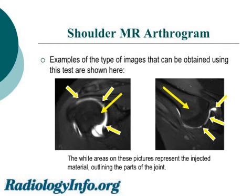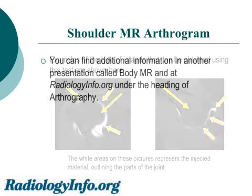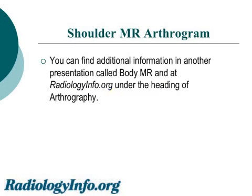Examples of the types of images that can be obtained using this test are shown here. The long arrows show the upper arm bone, or humerus, at the end near the shoulder. The short arrows show the white material representing the contrast which has been injected into the joint, outlining various structures within the joint. You'll be able to find additional information in another podcast called Body MR and at radiologyinfo.org under the heading of arthrography. Thanks for listening.